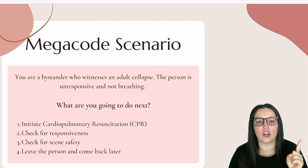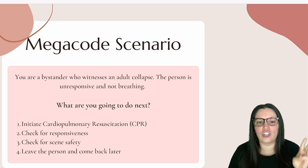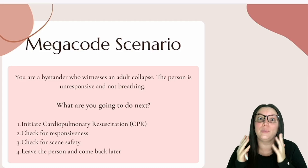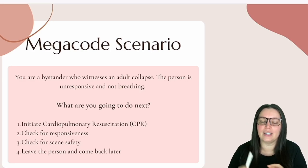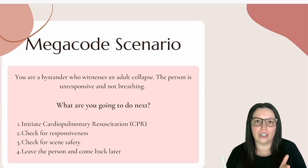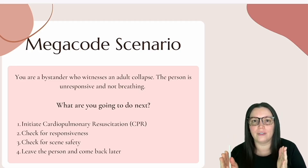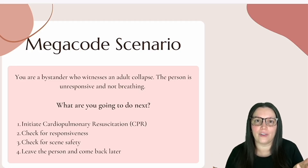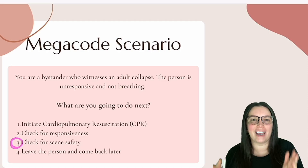Are you going to: one, initiate CPR; two, check for responsiveness; three, check for scene safety; or four, leave the person and come back later? We can automatically eliminate number four — we never want to leave someone who has potentially experienced a cardiac arrest. The first thing you always want to do in BLS is assess your environment and your patient before you ever put hands on somebody. So the correct answer is number three: check for scene safety.